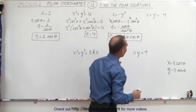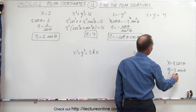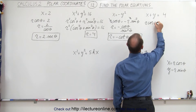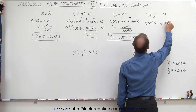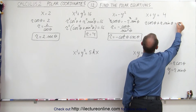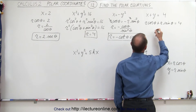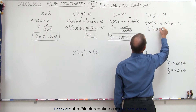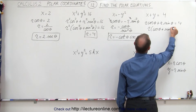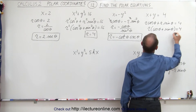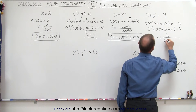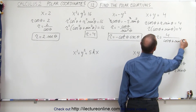In the next example, we replace x and y accordingly. We end up with r times the cosine of theta plus r times the sine of theta is equal to 4. Factoring out an r, we have r times the quantity cosine of theta plus sine of theta equals 4. Finally, r is defined as 4 divided by the cosine of theta plus the sine of theta.